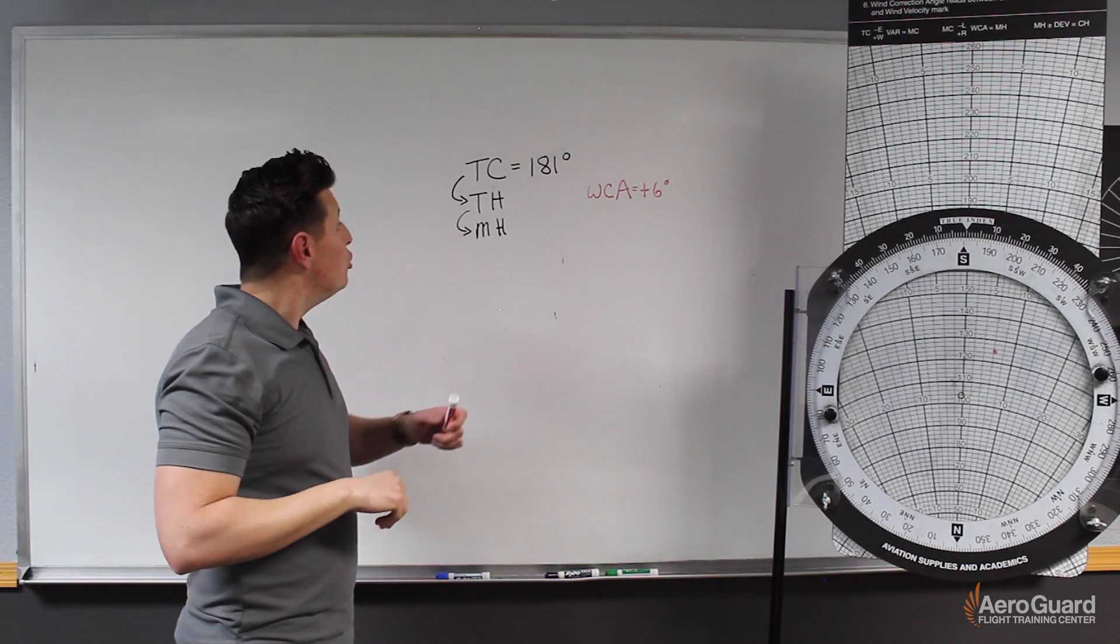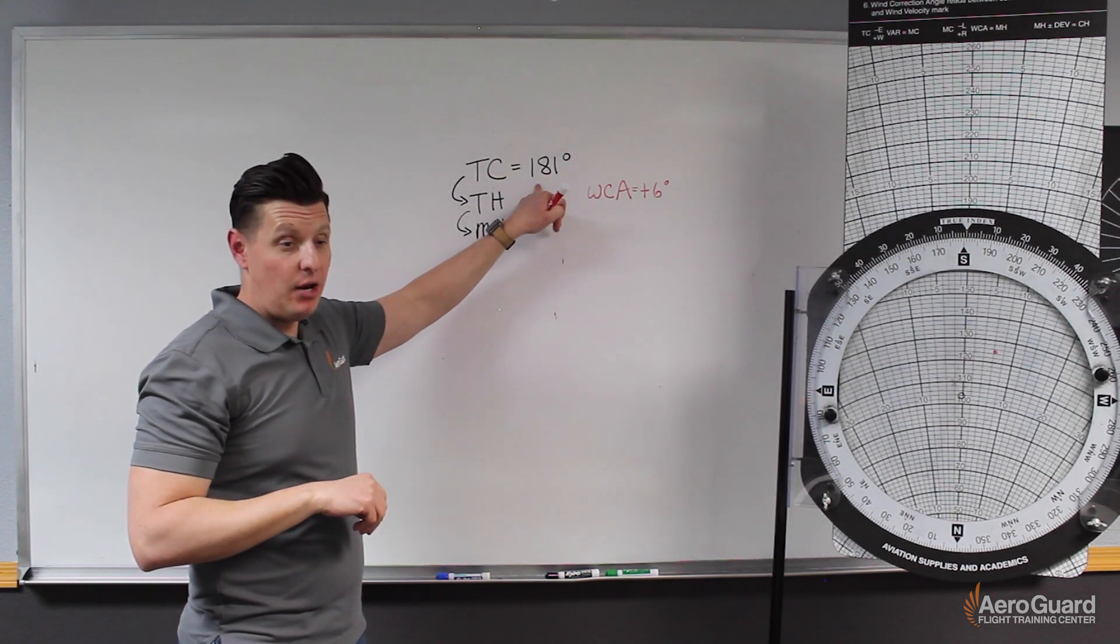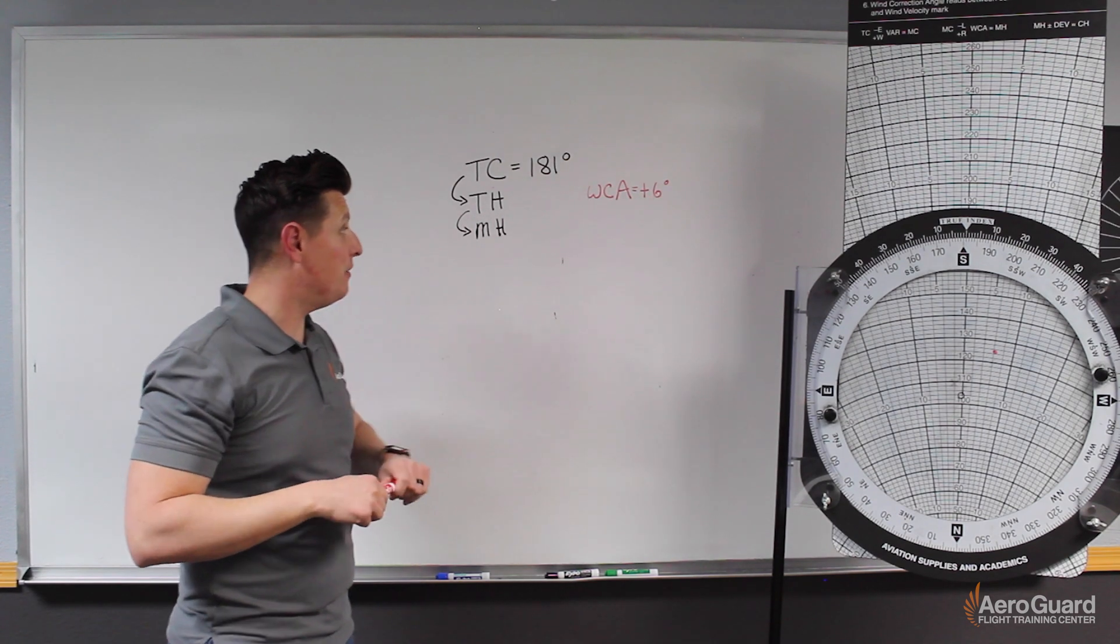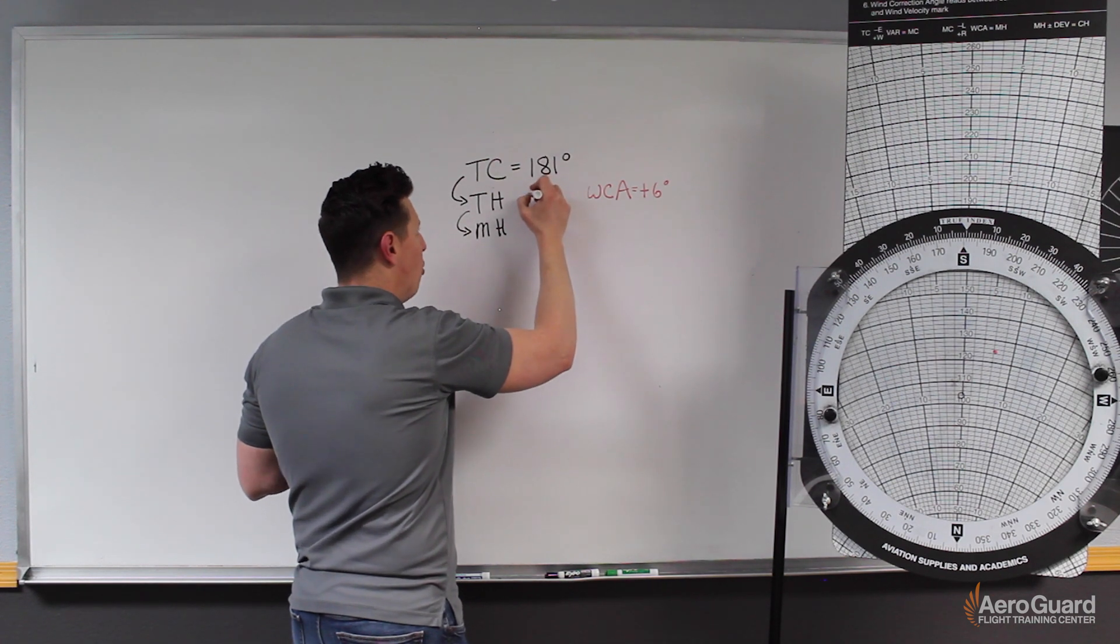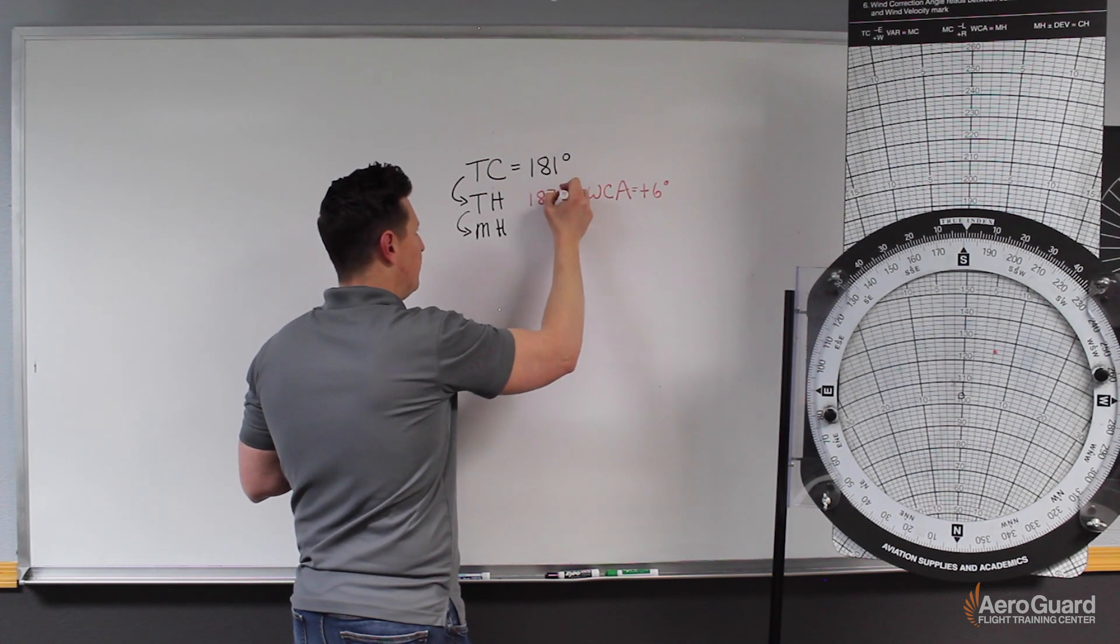So true course is 181 degrees. We can add the 6 degrees of wind correction angle, and that means our true heading will be 187 degrees.